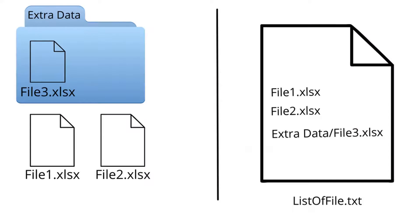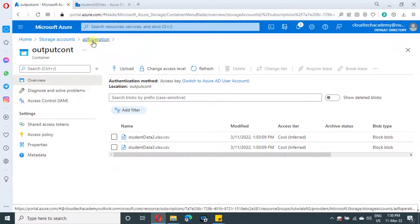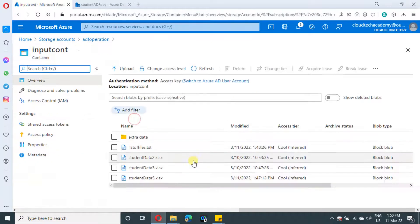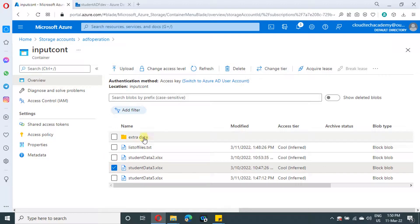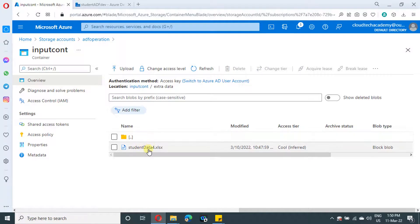In the next scenario, we have file one and file two, and a third file inside a folder called extra data. So let me show how we can specify this in our list of file — the folder name followed by a backslash and then the file name. Let me get back to the input container. Previously we loaded those two files, and now we also need to process the file inside this folder.